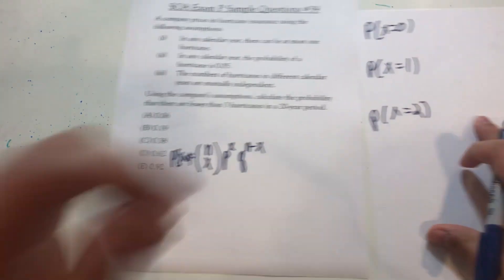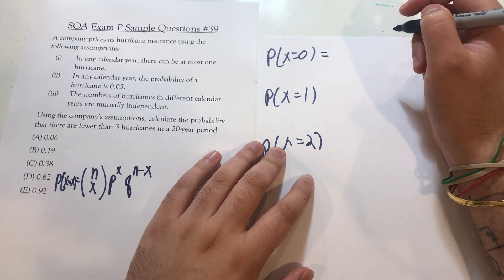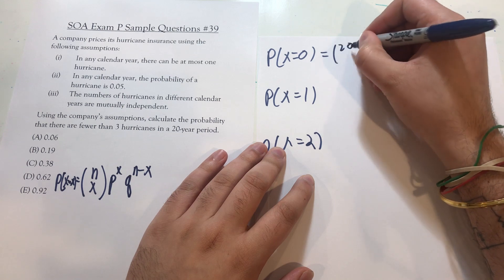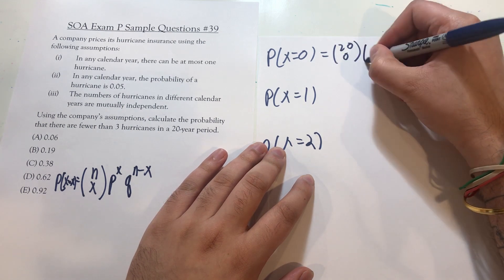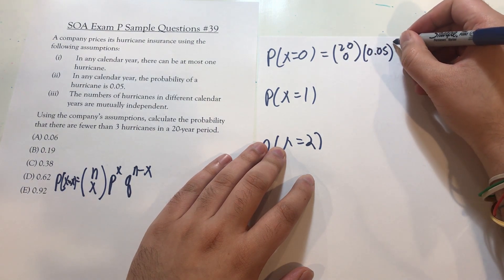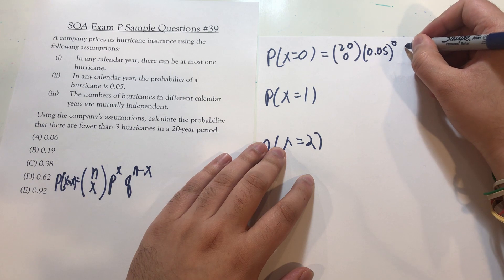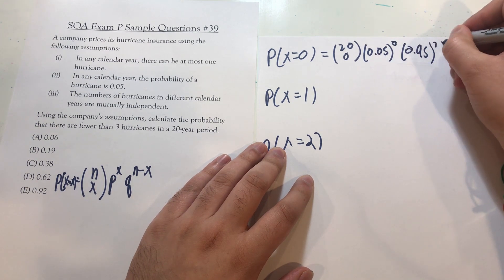So we're going to fill these in for each of these. So the probability of zero hurricanes, that's going to be 20 choose zero times 0.05 raised to the zero power times 0.95 raised to the 20th power.